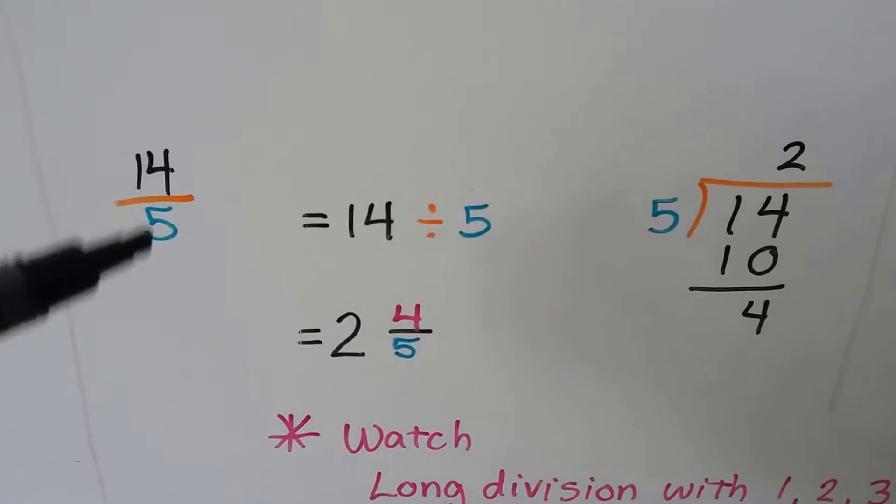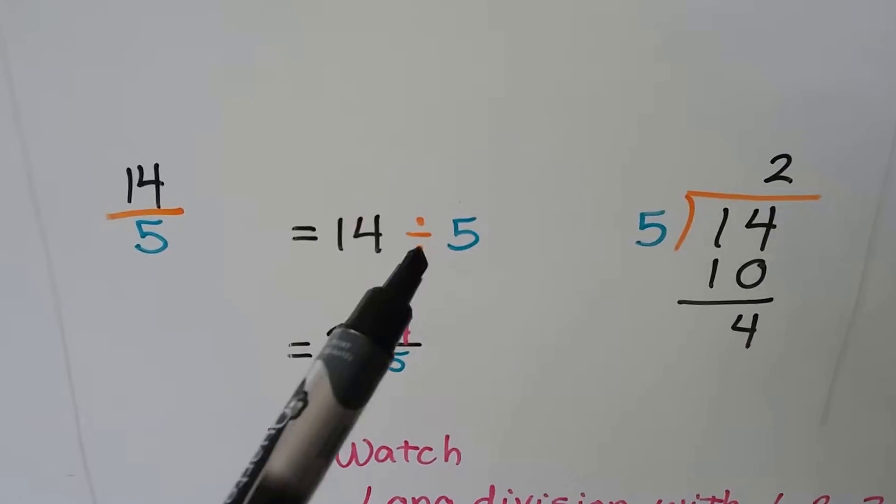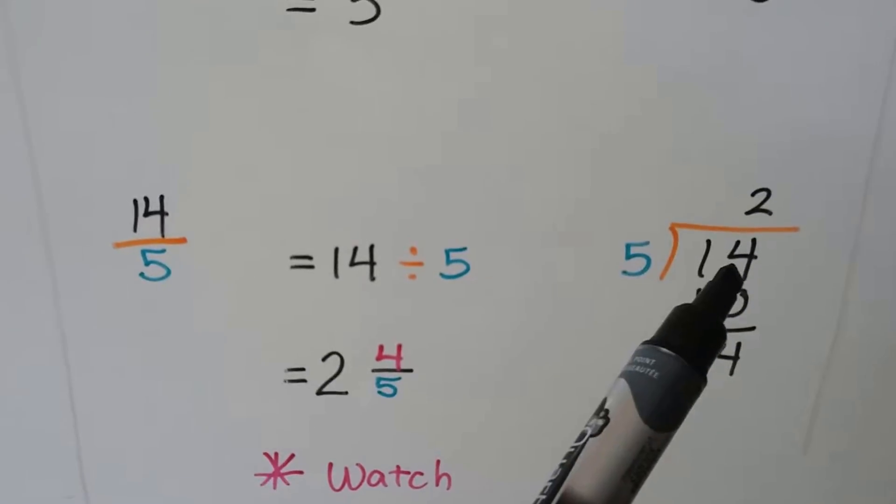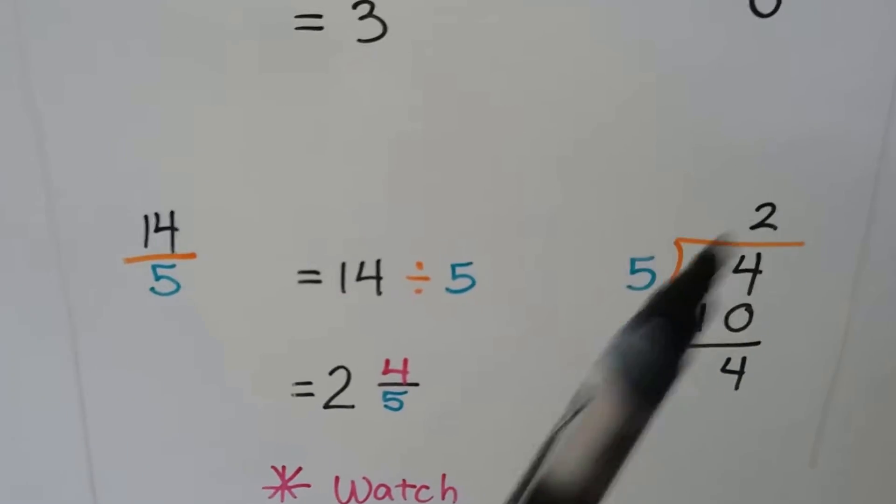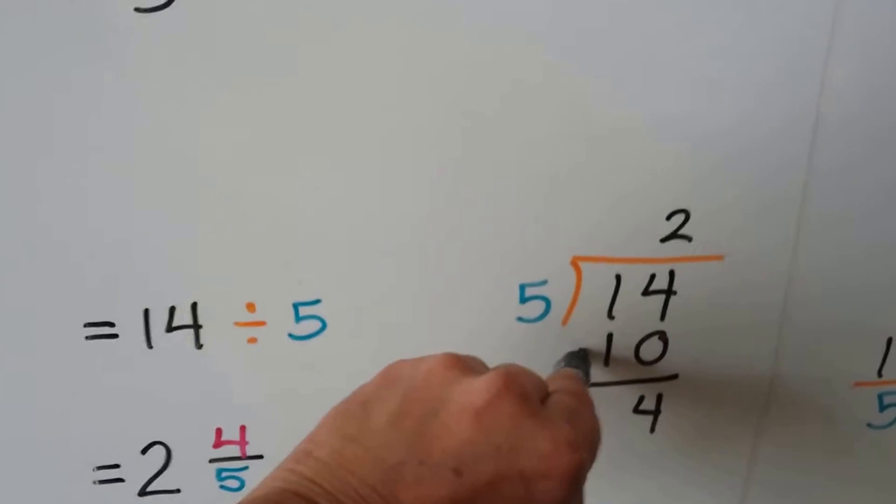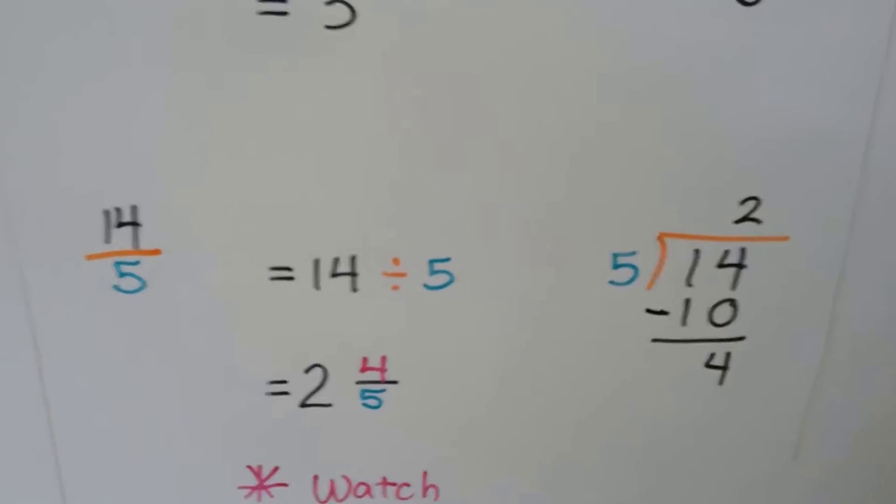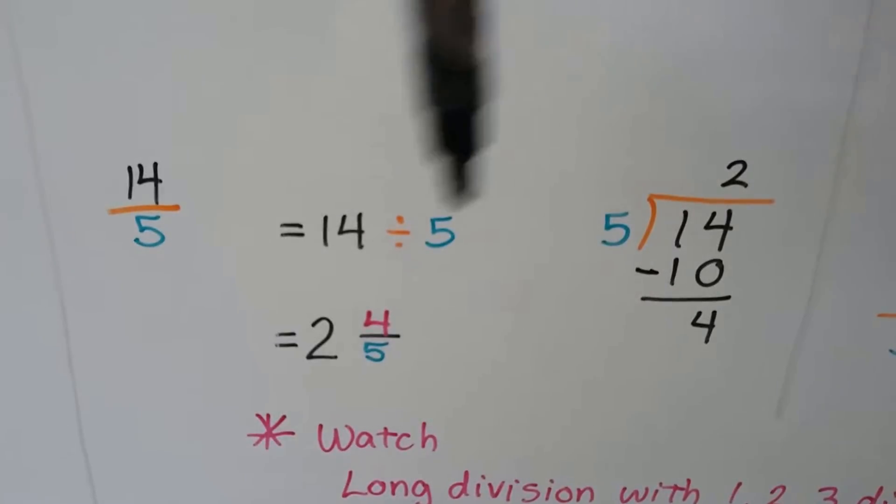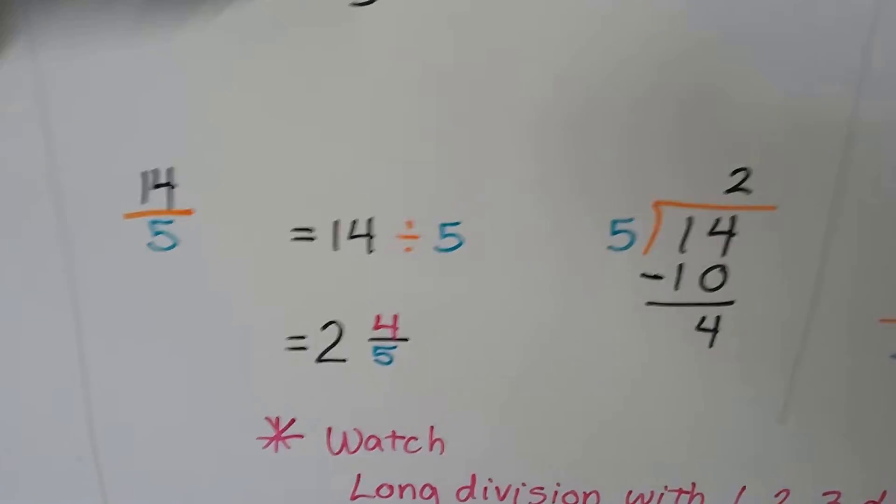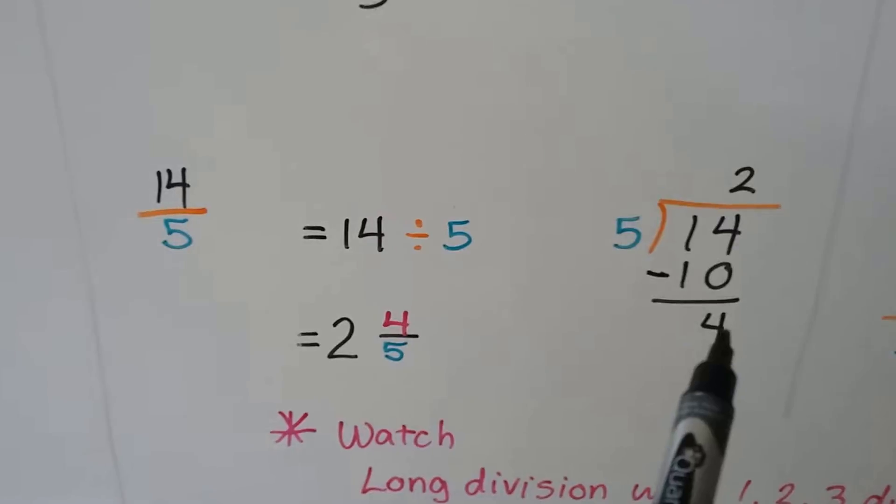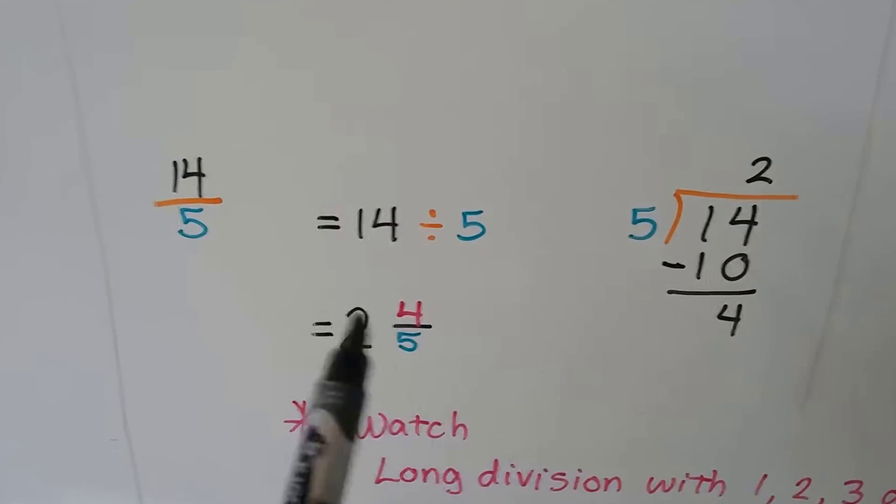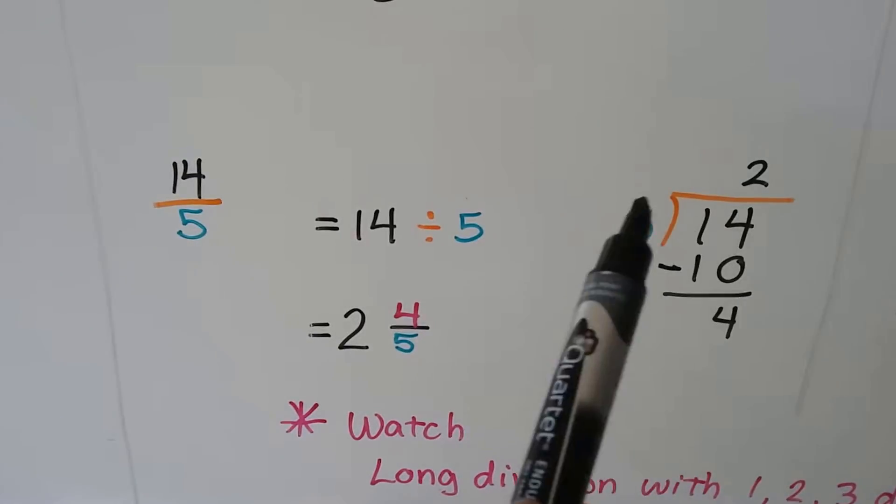Try it again. We have 14 fifths now. 14 divided by 5. That's what that means. How many times can 5 fit into 14? 2. 5 times 2 is 10. We do the subtraction. And we get 4 left over. So our answer is 2 as our whole number. That's the quotient. And our fraction is the remainder on top of the divisor. So we have 2 and 4 fifths.